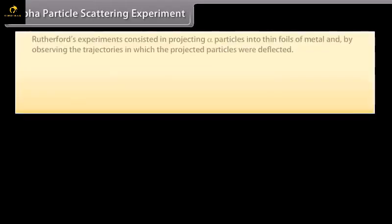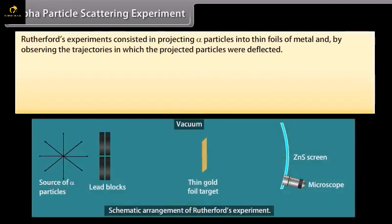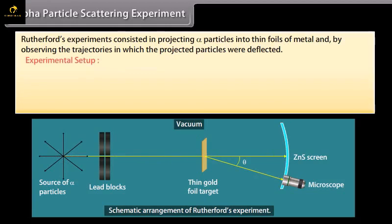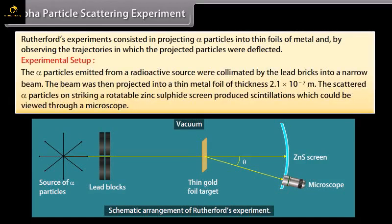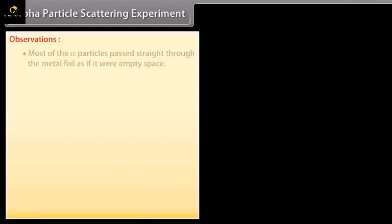Alpha particle scattering experiment: Rutherford's experiment consisted of projecting alpha particles into thin foils of metal and observing the trajectories in which the projected particles were deflected. The alpha particles emitted from a radioactive source were collimated by lead bricks into a narrow beam, then projected into a thin metal foil of thickness 2.1 × 10 to the power minus 7 meters. The scattered alpha particles struck a rotatable zinc sulfide screen, producing scintillations viewable through a microscope.